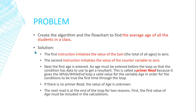We have to understand the problem first. Finding the average means we need to find the sum — which is accumulating, as we covered in the last lecture — and we need to find the count. So we can divide the sum by the count to get the average. The first thing we should do is initialize a variable sum to zero, because we are summing.